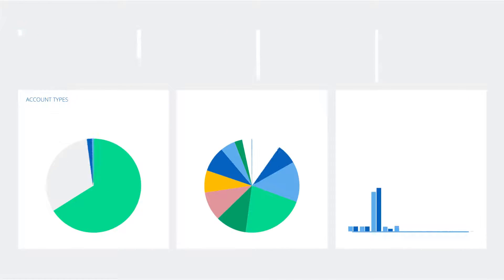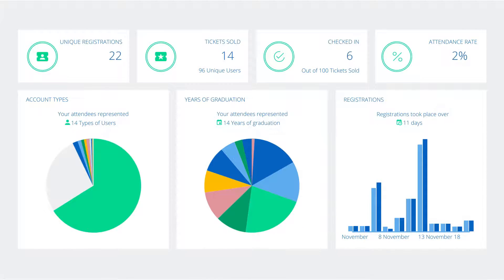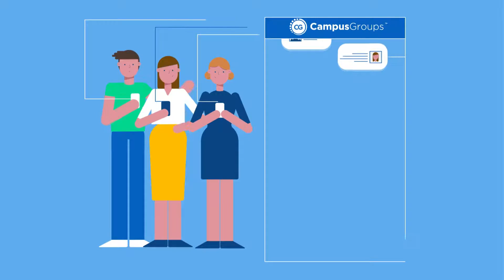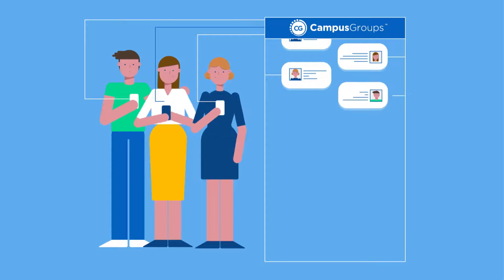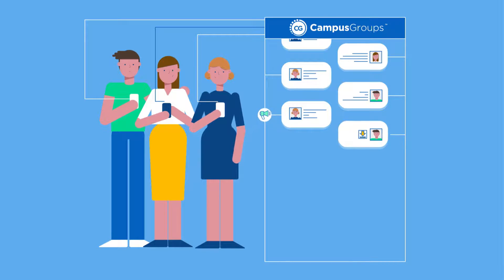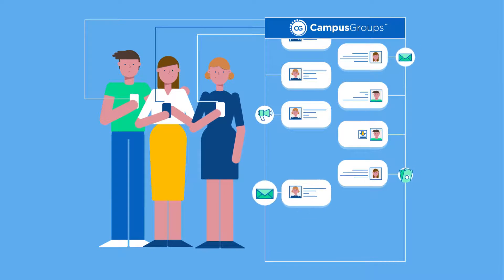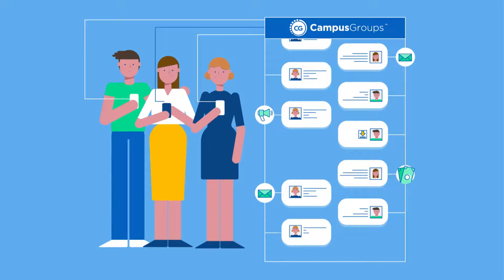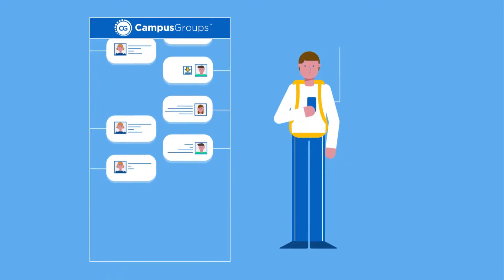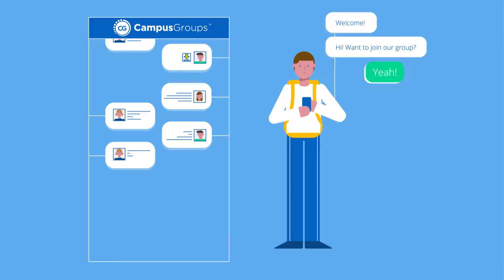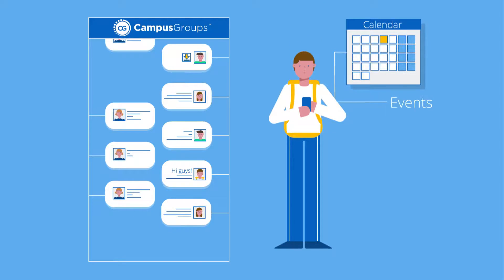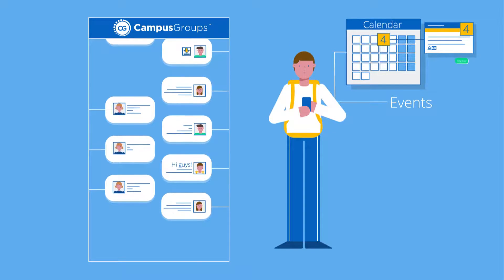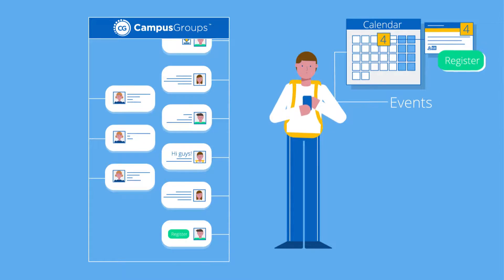Administrators can easily keep track of event attendance and approval processes, while group leaders can manage their events, newsletters, files, payments, and more. Most importantly, with Campus Groups, every student knows exactly where to look to find opportunities to get involved.